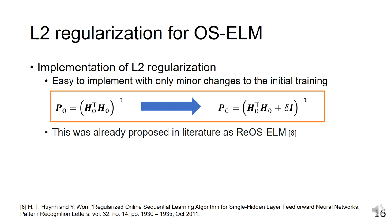When adding L2 regularization, we only need to add the identity matrix multiplied by a constant during the initial learning, and it does not affect the sequential learning. Please note that the OS-ELM with L2 regularization is called OS-ELM-L2.